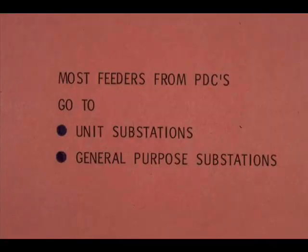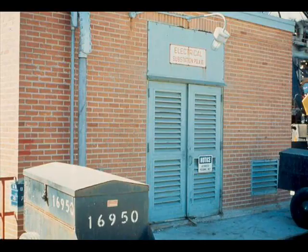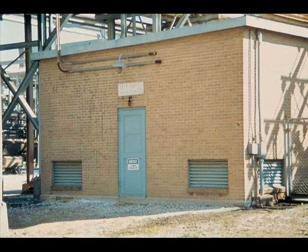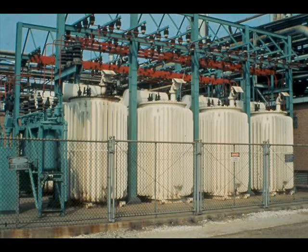Most feeders from PDCs go to substations, which one large plant classifies as unit substations or general purpose substations. A unit substation serves a single process unit; for example, PSLA-10 substation serves number 10 pipe still. A general purpose substation is not limited to serving a single unit — one such substation is S-10, named because it is on Avenue S and 10th Street. At substations, transformers step down 13,800 volt current to 2,400 volts, 480 volts, 240 volts, 120 volts, or other required voltages.